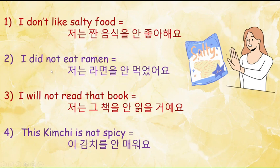The next example is: I did not eat ramen. So in Korean it is 'chanen ramyonu an maugasayo'. Just before the verb 'makta', which is conjugated in the past tense, we have placed 'an'. Next is: I will not read that book. In Korean: 'chanen kya chegu an ilku koyayo'. Here we have used the verb 'ekta' and conjugated it in the future tense, and placed 'an' before it to turn the whole sentence negative.